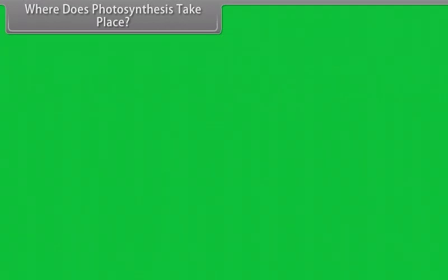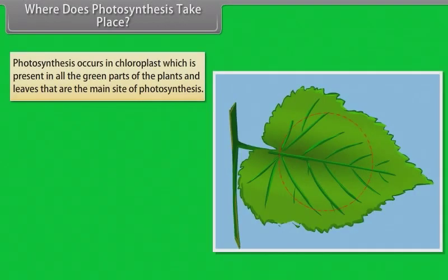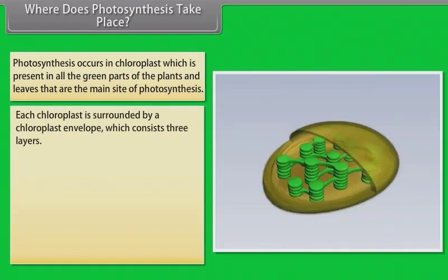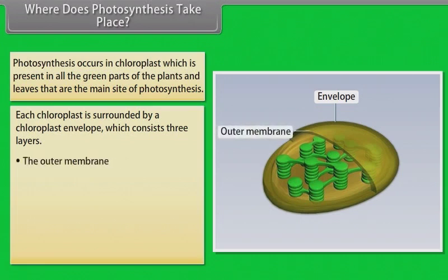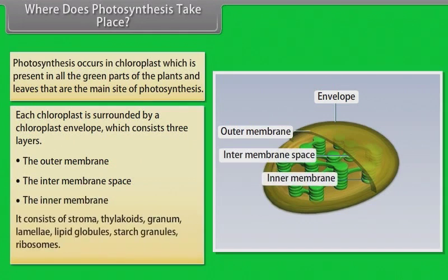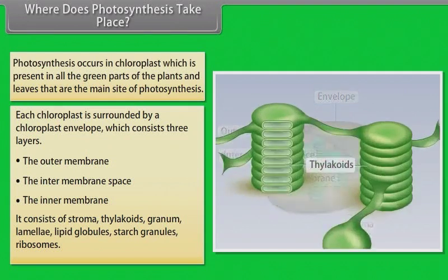Photosynthesis occurs in the chloroplast, which is present in all the green parts of plants. Leaves are the main site of photosynthesis. Each chloroplast is surrounded by a chloroplast envelope consisting of 3 layers: the outer membrane, the inter-membrane space, and the inner membrane. It consists of stroma, thylakoids, and granum.